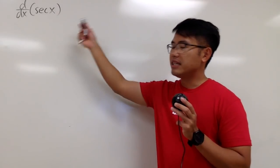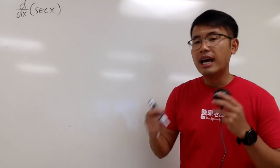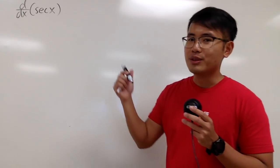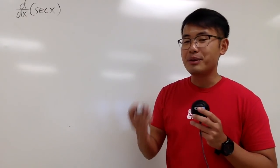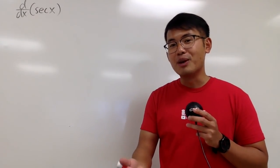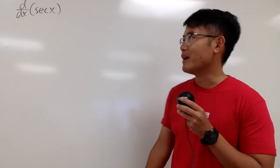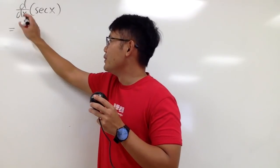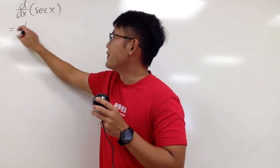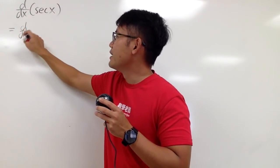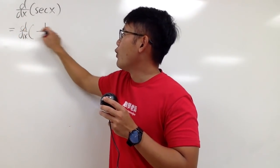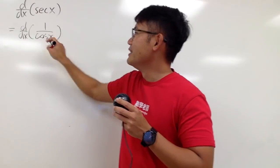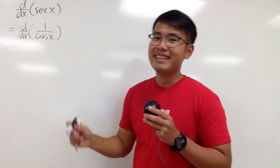We will be differentiating secant x. One of the ways to do it is, of course, you can use the definition, and you can leave a comment down below and let us know how that goes. But I will choose to differentiate 1 over cosine x instead.